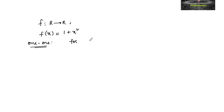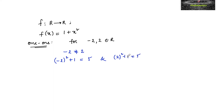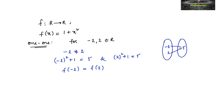Let's check one-to-one. Consider two distinct numbers: minus 2 and plus 2, both belonging to the real numbers. Since minus 2 ≠ plus 2, we check: (−2)² + 1 = 5 and (2)² + 1 = 5. So f(−2) = f(2), meaning two distinct elements give the same image. Therefore this function is not one-to-one.